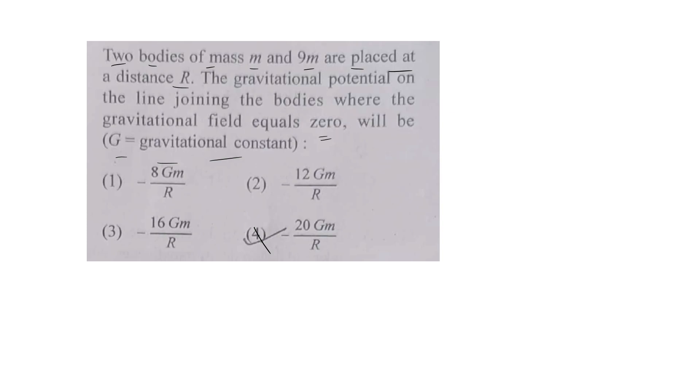Okay, so there is one body of mass m and 9m separated by a distance of R, and there is one point. That point distance we'll call it as x. Now we do Gm by x squared